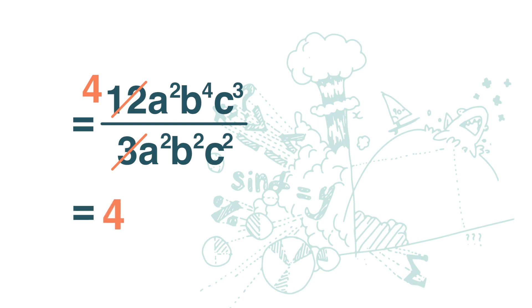And then up there is a square. Down here is a square. They cancel out. b to the power of 4 and b square. We just subtract 2 from 4. So we have b square.